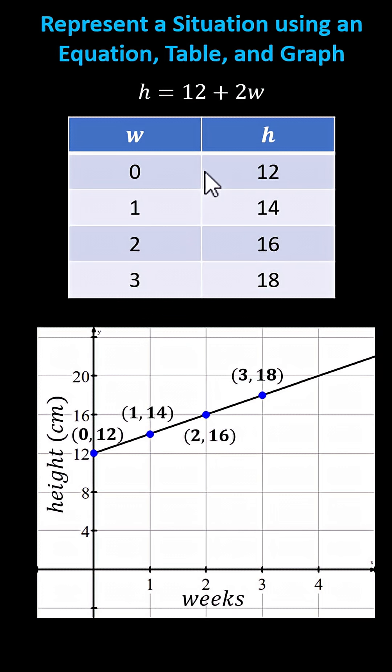Next we plot the ordered pairs from the table. We have 0 comma 12, 1 comma 14, 2 comma 16, and 3 comma 18.